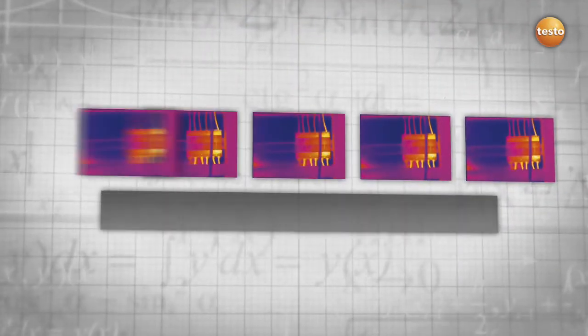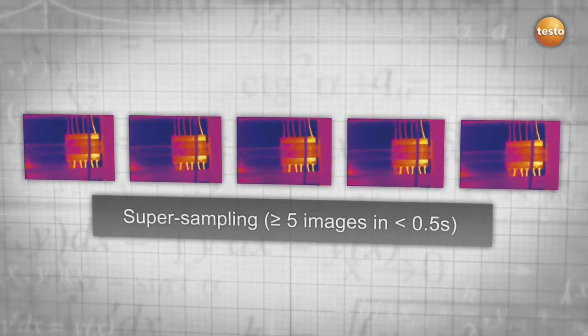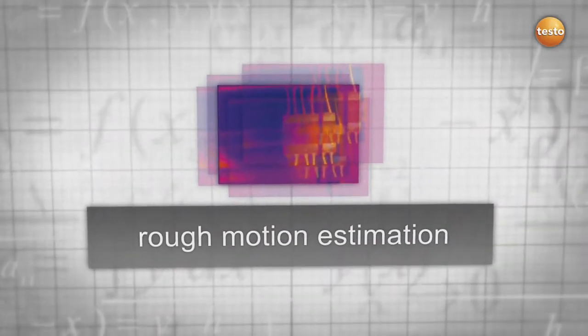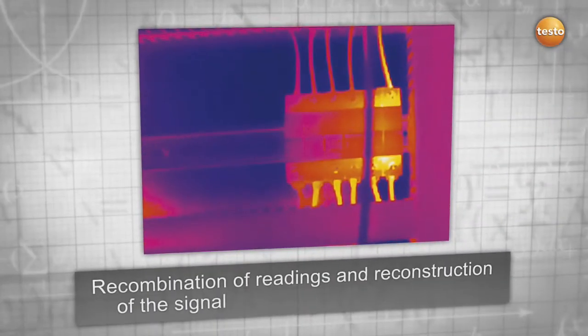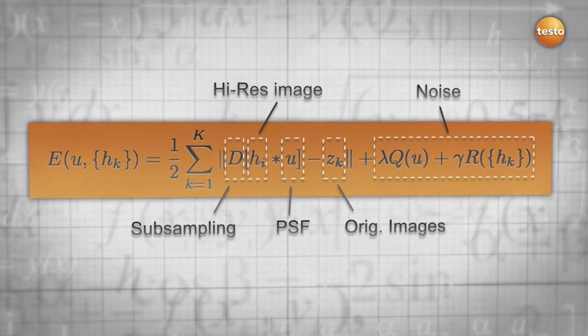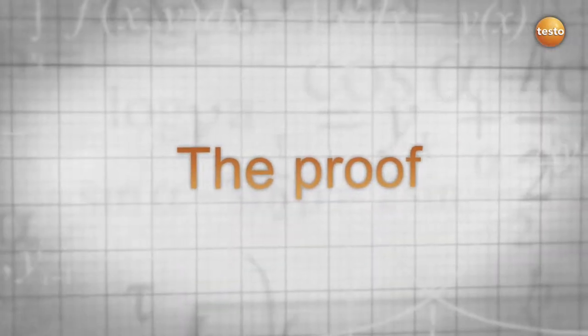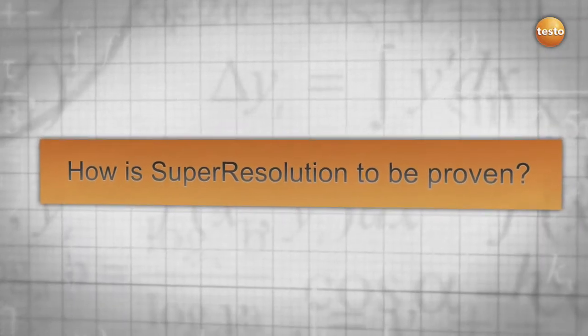The technology works as follows: the thermal imager takes multiple images in less than 0.5 seconds. They are combined in one high-resolution image uniting the technologies of super sampling and deconvolution. This process is reflected in the formula that was exclusively developed for the Testo Super Resolution technology.